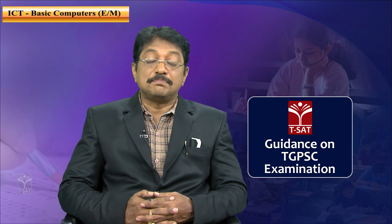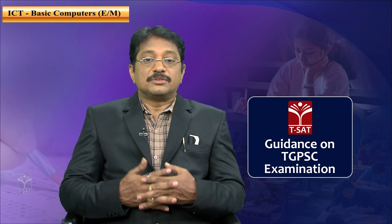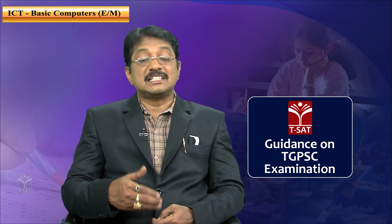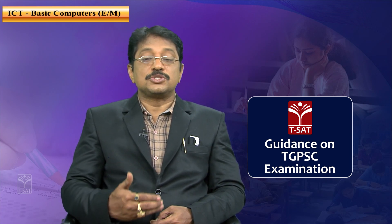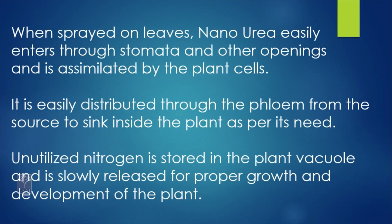Nano urea liquid is developed to replace conventional urea and cut down its requirement by 50 percent. For example, if you use one kilogram of conventional urea for a plant, just 500 grams of nano urea is enough to provide the same quantity of nitrogen. When you spray it on leaves, nano urea easily enters through the stomata and other openings and is assimilated by the plant cells. It is easily distributed through the phloem from source to sink inside the plant as per its need.